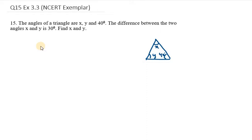Hello everyone, let's start with question number 15. The angles of a triangle are x, y, and 40 degrees. The difference between the two angles x and y is 30 degrees. Find x and y.